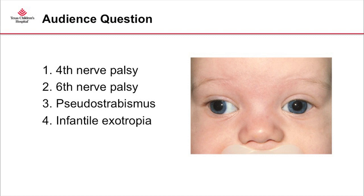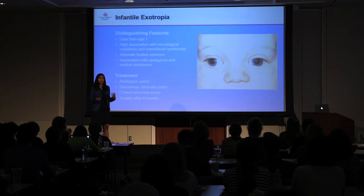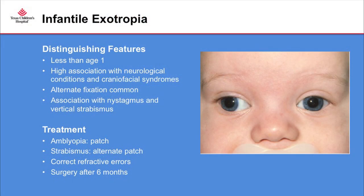This baby has infantile exotropia — the eye is deviated outward and the light reflex is displaced nasally, as opposed to infantile esotropia where it's displaced temporally. Infantile exotropia should present before age one. It has a high association with neurological conditions and craniofacial syndromes. Alternate fixation is common, and it can be associated with latent nystagmus and vertical strabismus. If amblyopia is present, patching is indicated. For strabismus without amblyopia, we recommend alternate patching. Significant refractive errors should be corrected.